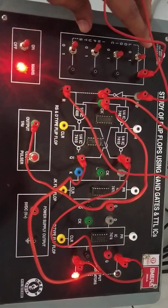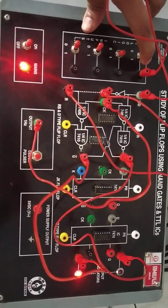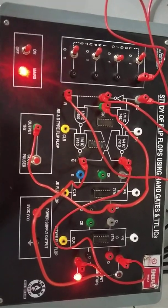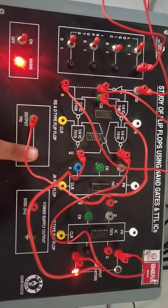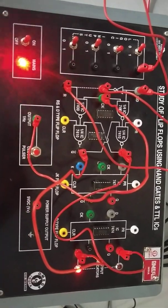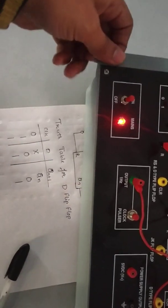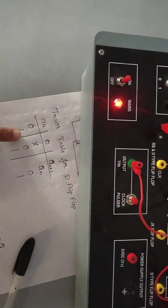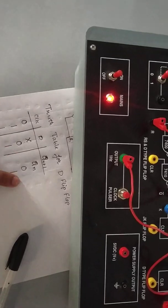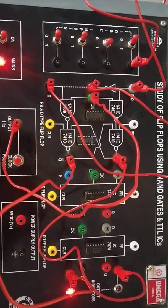Next, I make the data zero and apply a clock. When the clock is one and D is zero, the next value is zero. The next value is again zero, as expected from the truth table.